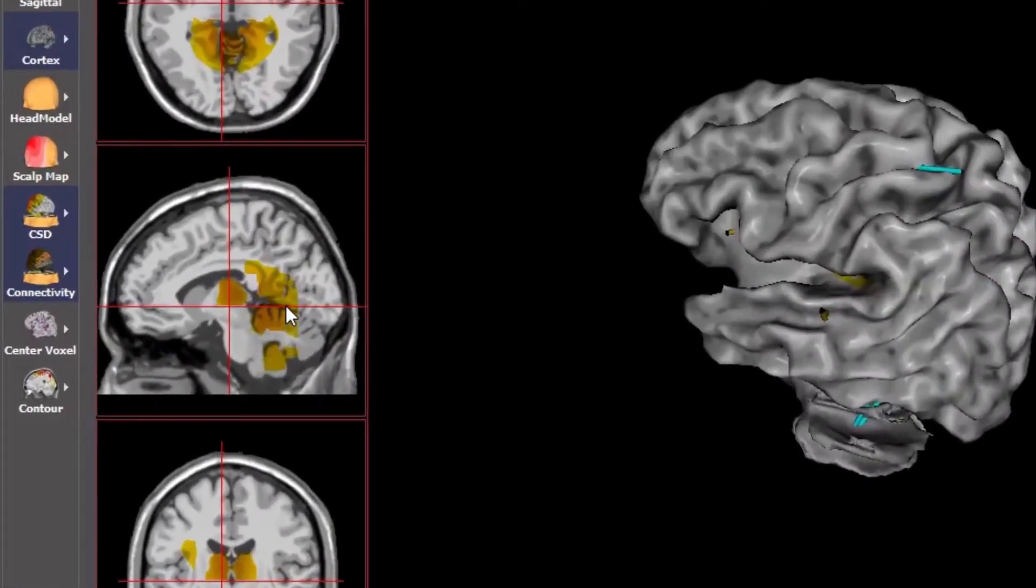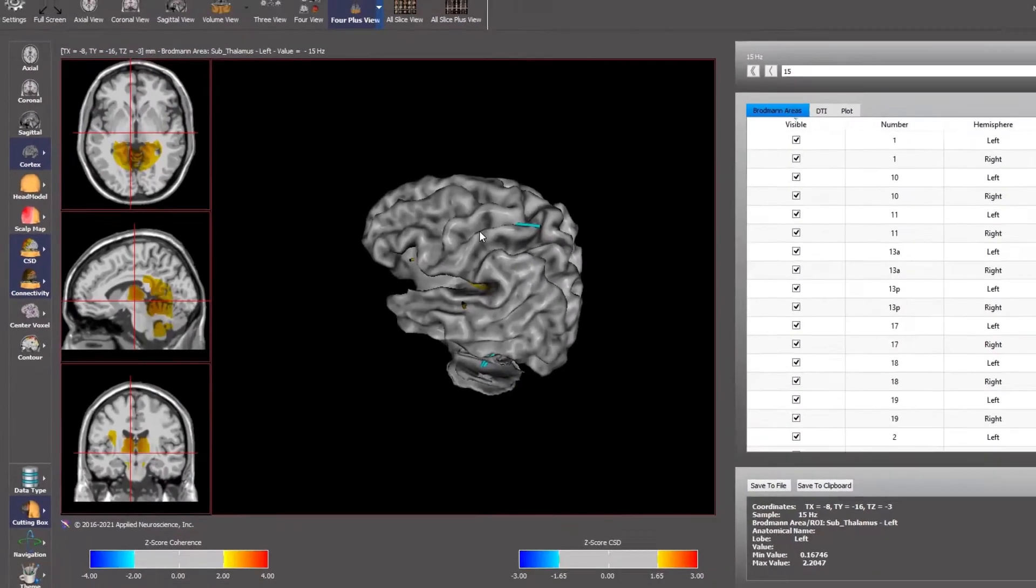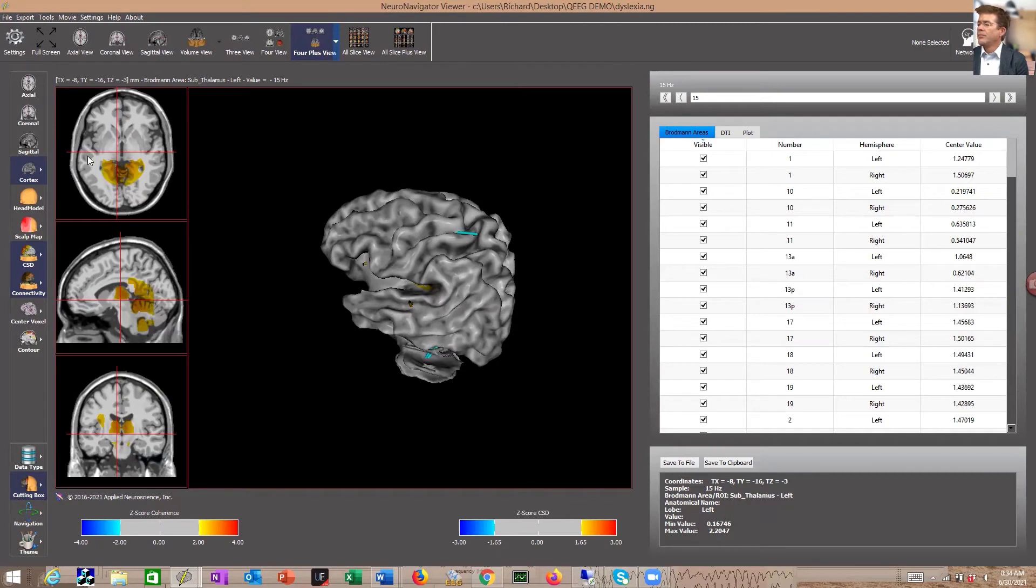From an attention regulation standpoint, we see the posterior cingulate and aspects of the cuneus dysregulated at about 15 Hz right in the low beta range.